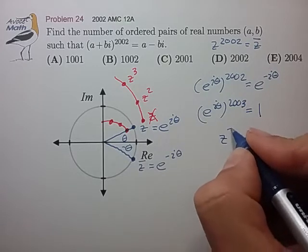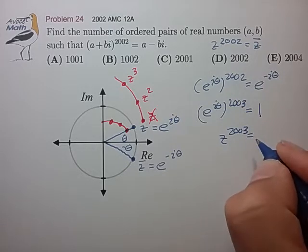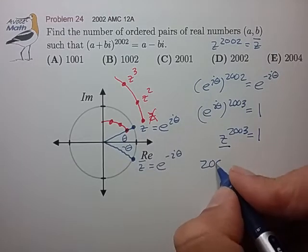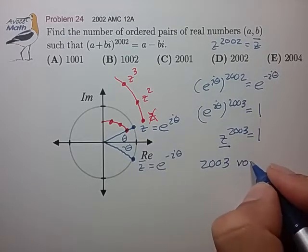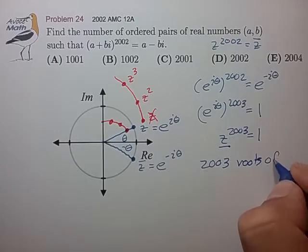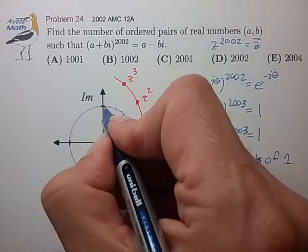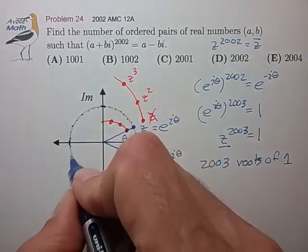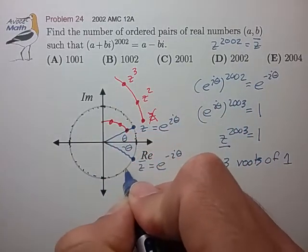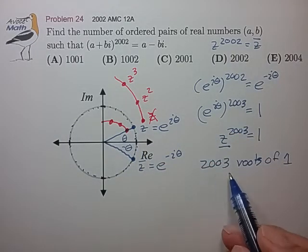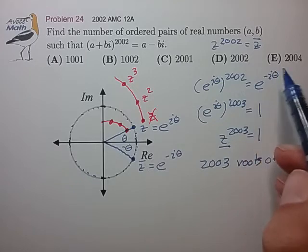So substituting Z back in, we see that the solutions in Z are basically the 2003 roots of 1, which is a dense set of points equally distributed around the unit circle. So it looks like our answer is 2003, but that's not one of the answer choices.